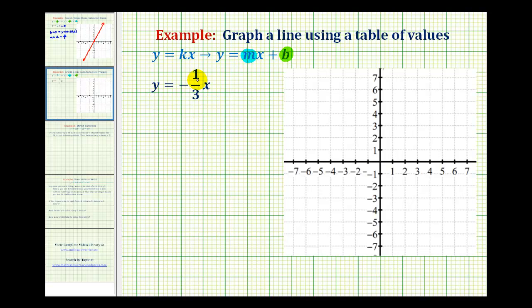So if we want to graph y equals negative 1/3x, it might be helpful to put a plus zero here on the end, just to remind us that means b is equal to zero. Remember b is the y intercept, so the y intercept of this line would be the point (0, 0), or the origin.